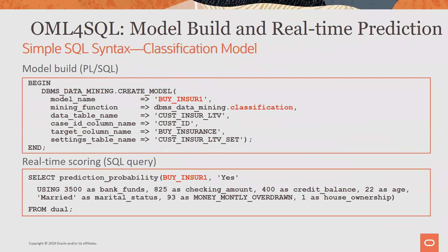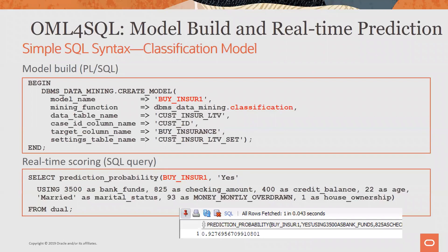For real-time or singleton scoring, consider a classification model to predict who's likely to buy insurance from the customer insurance lifetime value table. We SELECT the prediction probability using the model name — BUY_INSURANCE_1, a first-class database object. We predict 'Yes' the customer will buy, using predictor values specified directly in the query. Executing this query, we see this particular customer has a 93% chance of buying insurance — the model exists in the database and prediction takes place there.